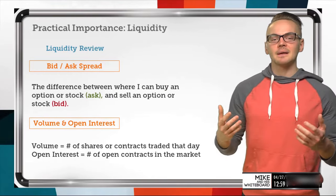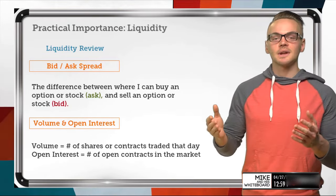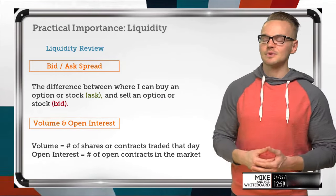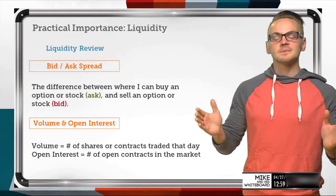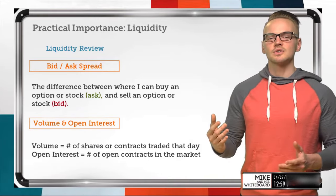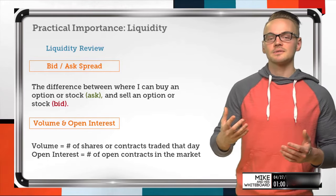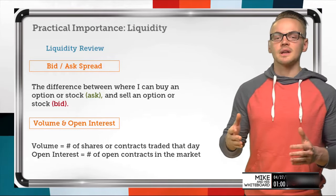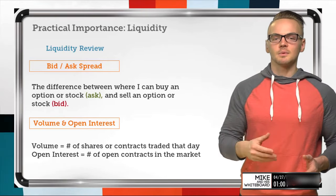When we're looking at a bid-ask spread, we're basically talking about the difference between where I can buy an option or stock — which is known as the ask price — and where I can sell an option or stock, which is the bid. We're looking at the spread between these two numbers, and the smaller the spread, the better for liquidity. If the market is liquid, we can route an order for the mid price and normally get filled.